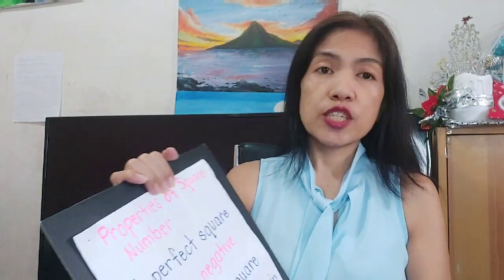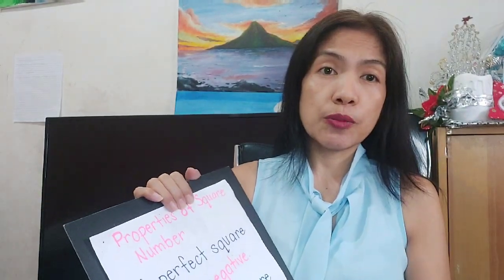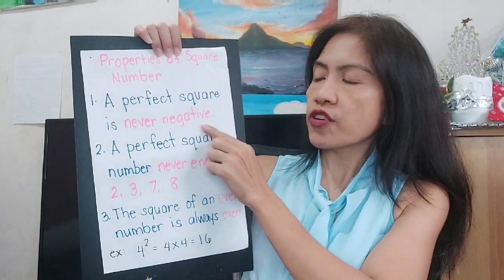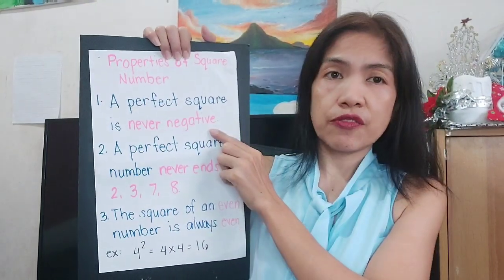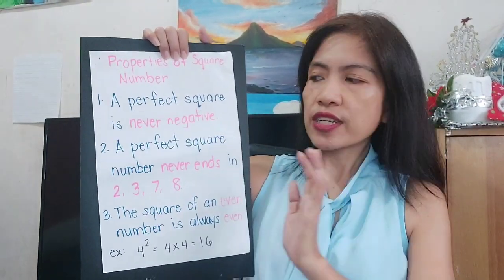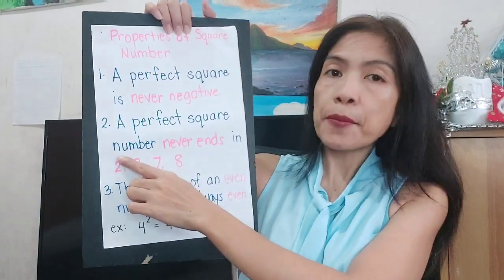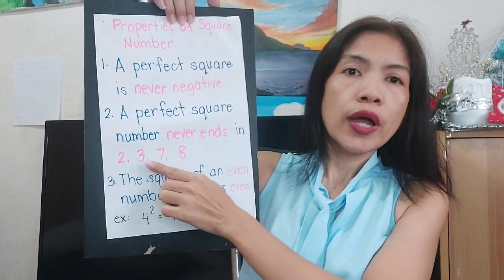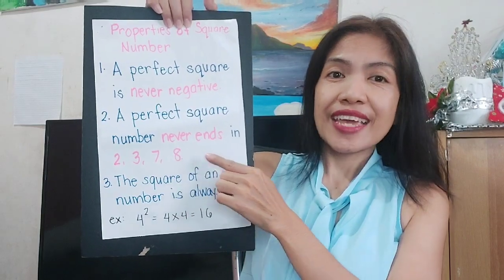Let's have some properties of square numbers. It's necessary for us to remember these. A perfect square is never negative, and a perfect square number never ends in 2, 3, 7, and 8.